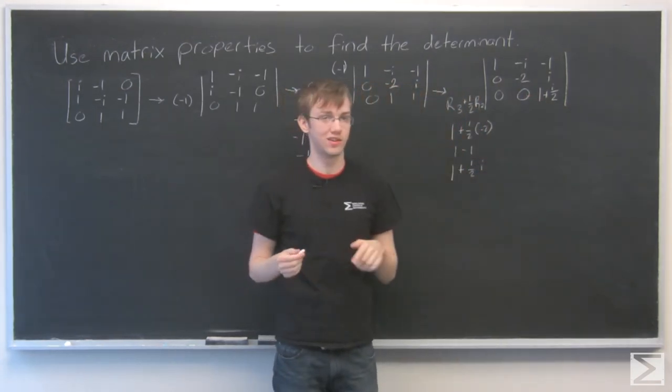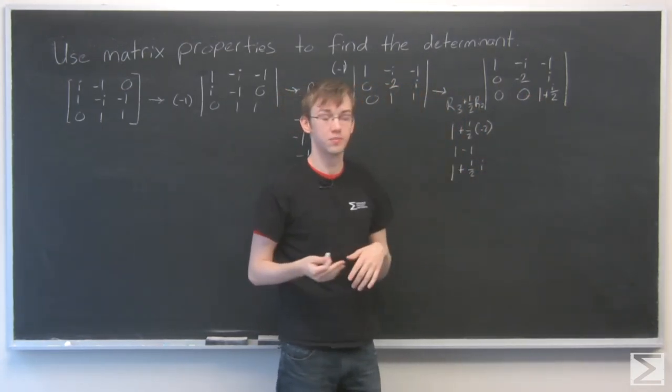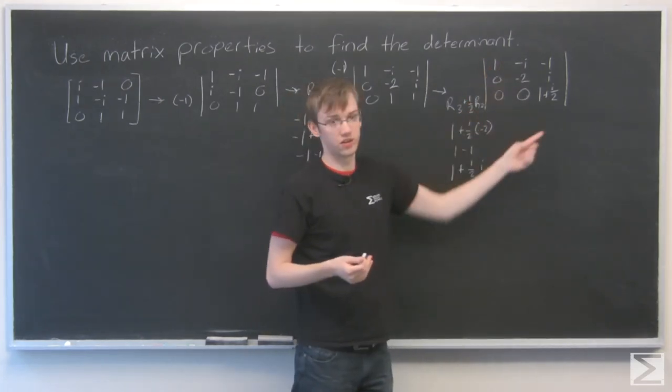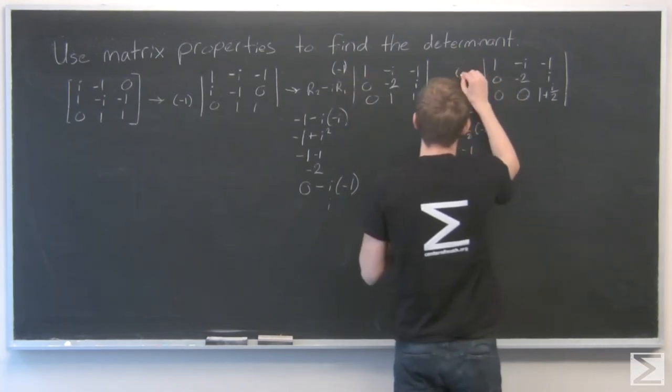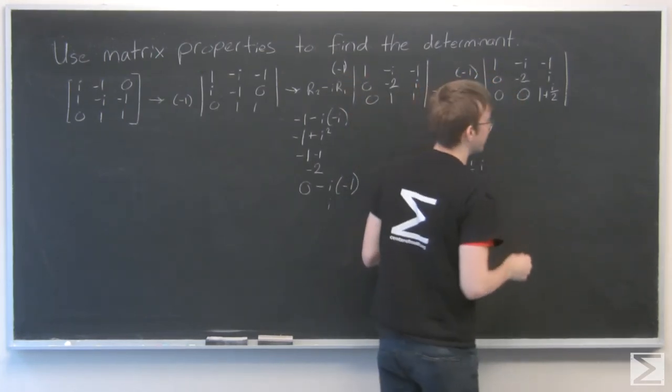So this matrix is now in upper triangular form. So we can just multiply across the main diagonal to find our determinant. And I have to remember I got this negative 1 that I'm still carrying over, very important.